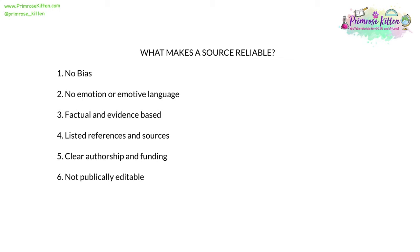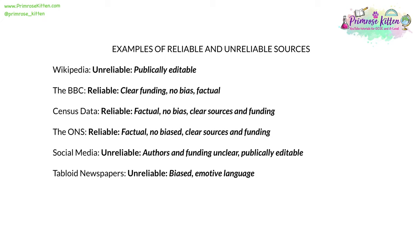So what makes a source reliable? Reliable sources should be free from bias, use limited or no emotional or emotive language, be factual and evidence-based, have listed references and sources for their information, have clear authorship and clear funding, and should not be publicly editable, like Wikipedia. Examples: Wikipedia is an unreliable source, as it is publicly editable. The BBC is considered to be reliable, as it has clear funding, no bias and is factual. Census data is also reliable — it is factual, without bias, with clear sources and funding. The Office for National Statistics is also reliable. Social media is an unreliable source, as authors and funding are unclear and it is publicly editable. Tabloid newspapers are also unreliable — they use emotive language and are biased.